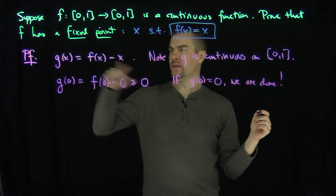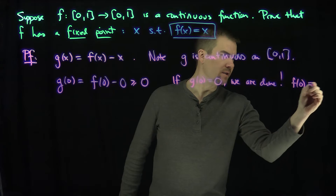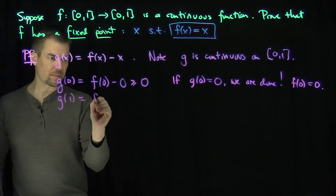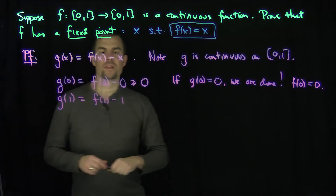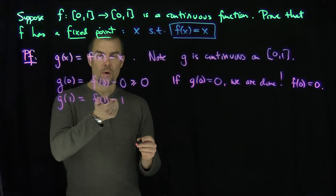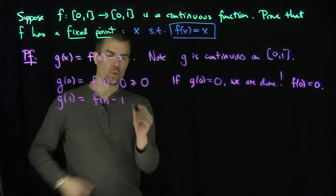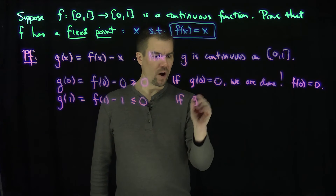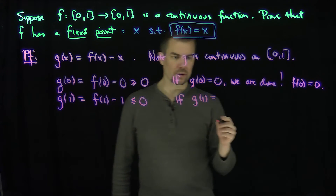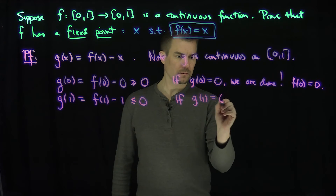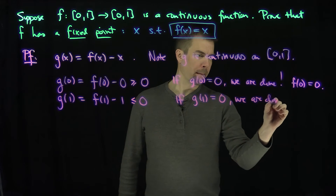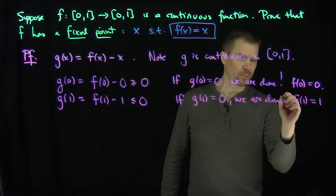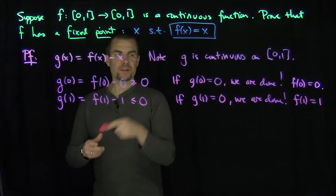Now let's look at g of one. g of one is f of one minus one. Since f of one is in the interval zero to one, something in that interval minus one is less than or equal to zero. If g of one equals zero, we are done — that would say f of one is equal to one, meaning one would be a fixed point.